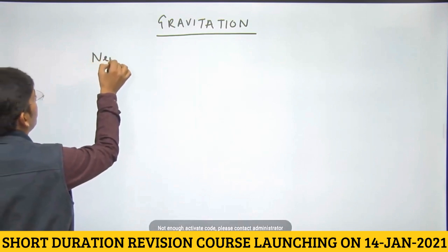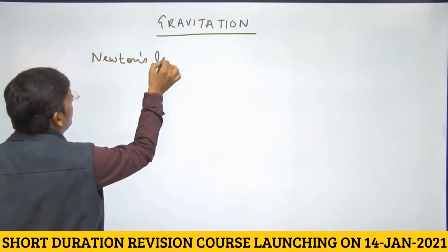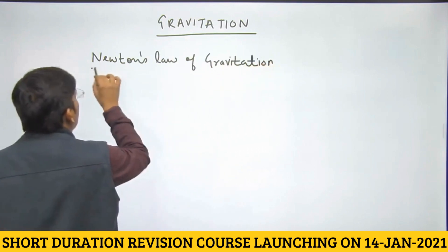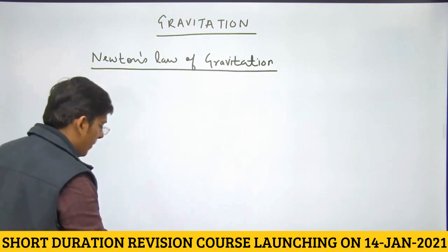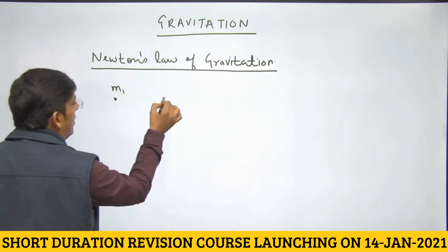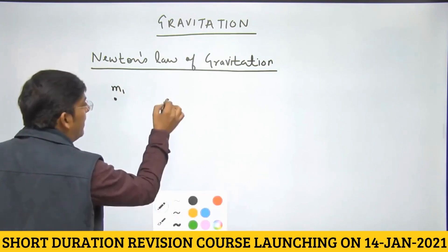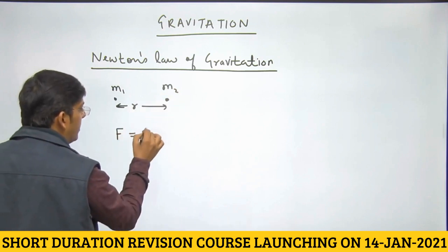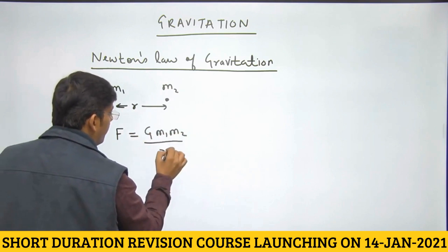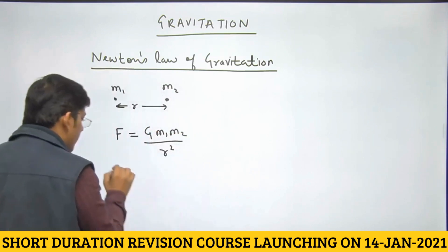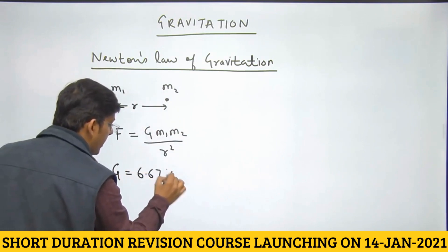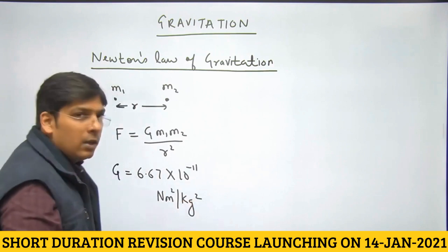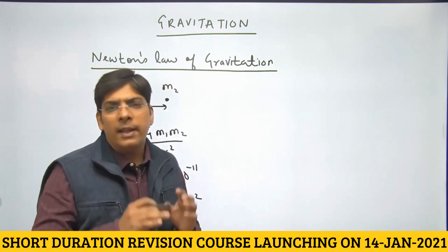The first topic is Newton's law of gravitation. We suppose two point masses m1 and m2. When we say point mass, that means the distance between the masses is very large compared to their body size. The force between these point masses is given by capital G times m1 times m2 divided by R squared. Capital G is called the universal gravitational constant, with value 6.67 × 10⁻¹¹ N·m²/kg². Gravitational force between two point masses obeys the inverse square law.